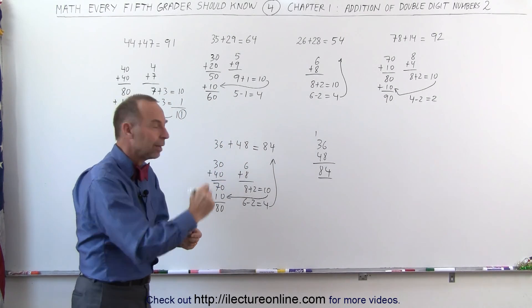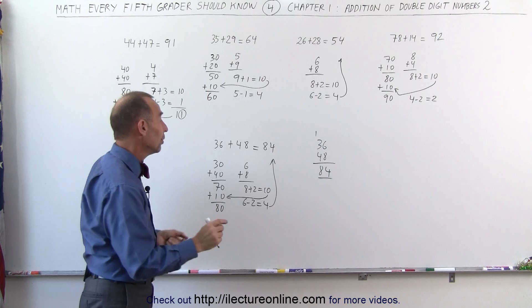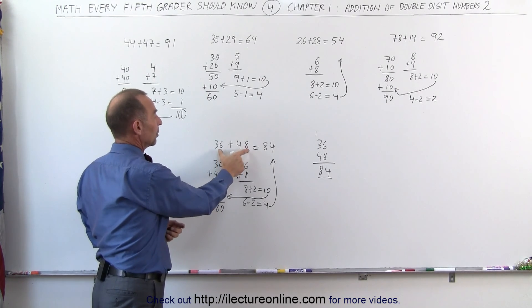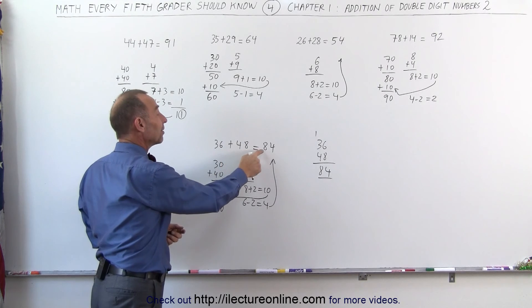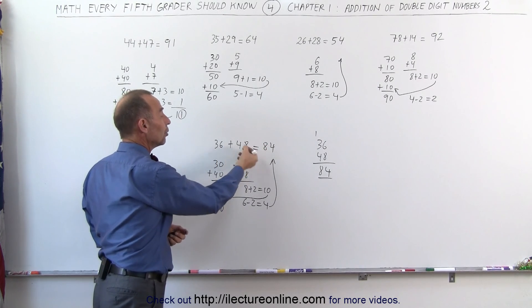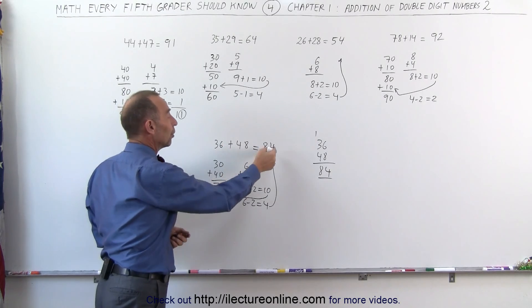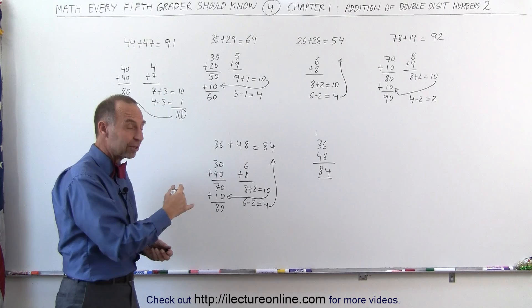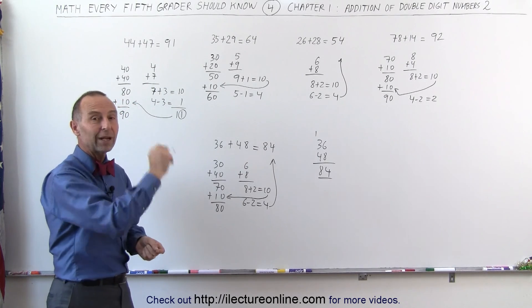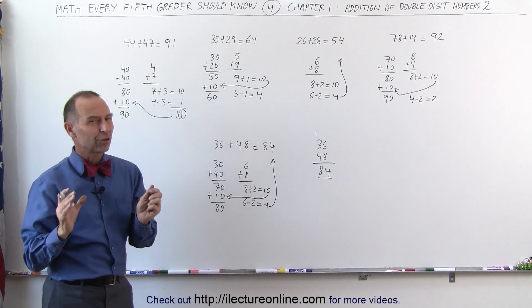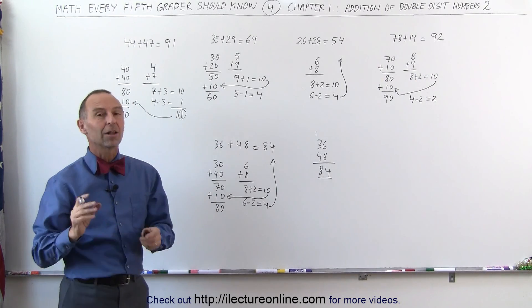However, you can do this very quickly in your head. You can say 30 plus 40 is 70. But those two together add up to more than 10, that makes 80. Write down the 8. 6 plus 8 is 14. You already used the 10, you're left with 4. You put a 4 there. And very quickly, over time, as you practice, you can do this quickly without having to write anything down. You just look at the number and you write down the answer. And once you can do that, you can do math like this a lot faster.